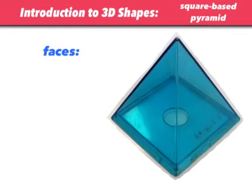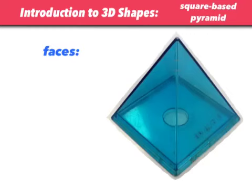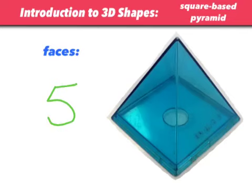We'll start with the base. Underneath here, in this section, is the square base — so that's one face, a square. Then we've got some triangular faces that go around the outside, and all of those join up to this point, which is what makes it a pyramid. So counting: one — the square — then two, three, four, and five on the other side. We've got four triangles and the square base, so altogether we've got five faces.